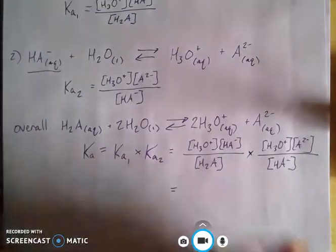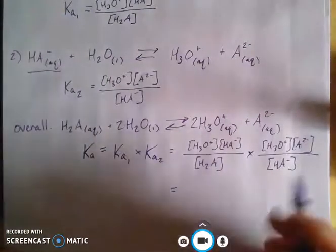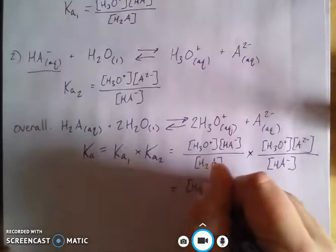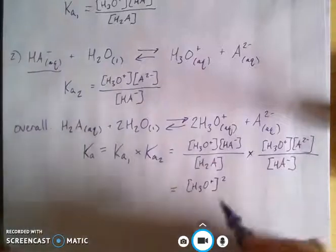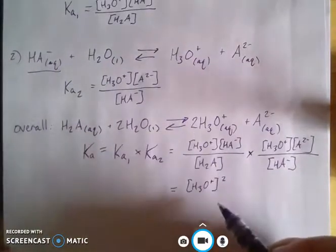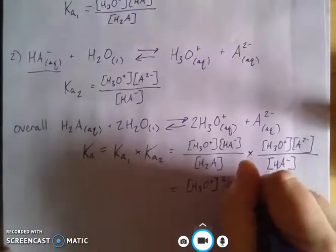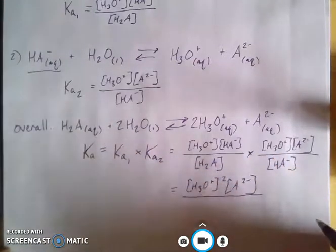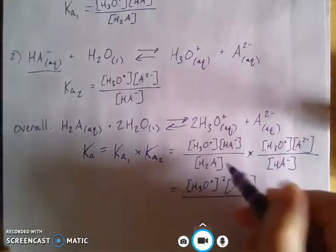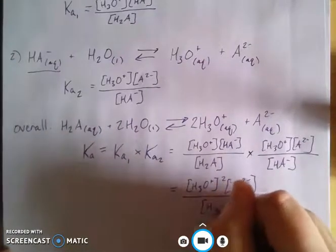And when we multiply those together and we kind of cross multiply and divide things out, then we end up with a Ka for the overall expression that is equal to what we would have predicted in the first place. It's going to be our hydronium concentration raised to the second power, which reflects our coefficient here - that's what we would have predicted - times our A2- and then all over our initial value here of our diprotic acid.